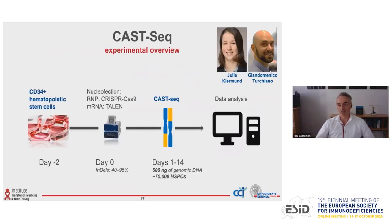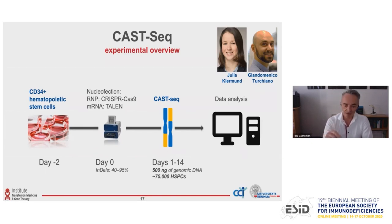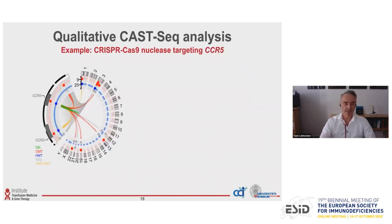This is how the assay is set up, developed by Jando and now taken over by Julia in my lab. We take hematopoietic stem cells and nucleofect them with CRISPR-Cas9 ribonucleoprotein complexes or mRNA. We reach activities at the on-target site of 40 to 95%. Then we culture the cells for 1 to 14 days, extract genomic DNA, and assay it for translocations. An important feature is that we only need 75,000 cells to do the assay, which is important when working with clinical material.